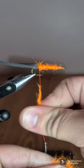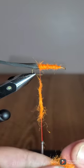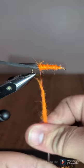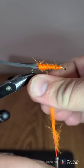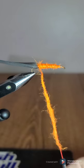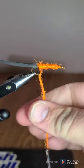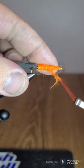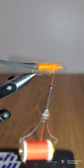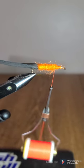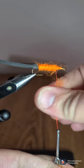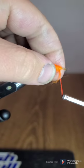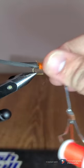And this is where we'll start going back towards the eye of the hook. Like I said, it don't have to be pretty. Just trying to build bulk. A little bit more. That's pretty good.